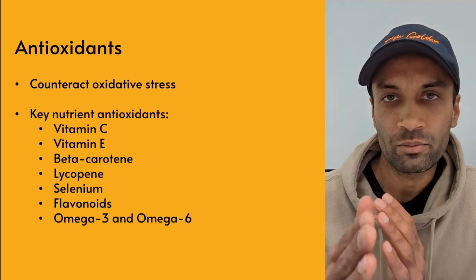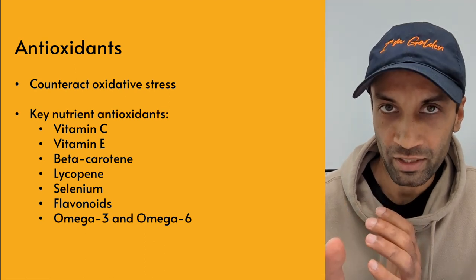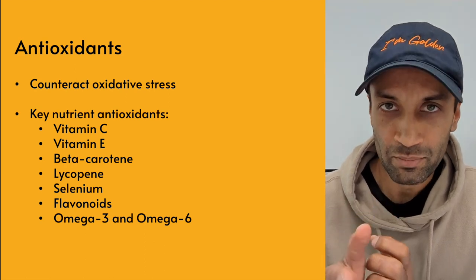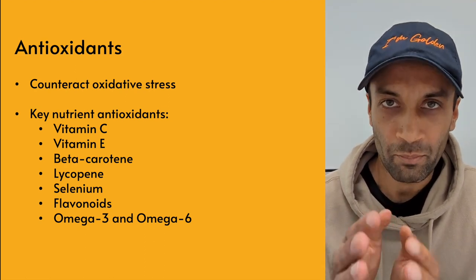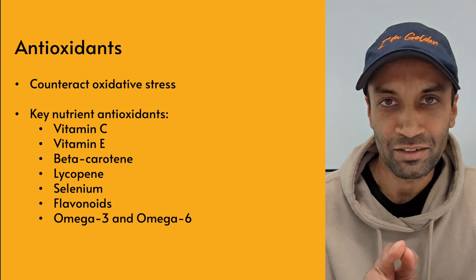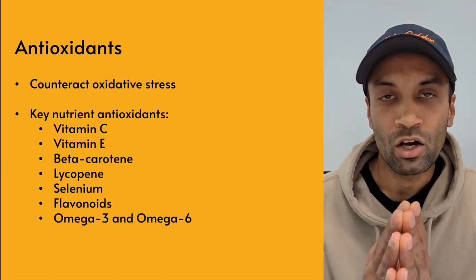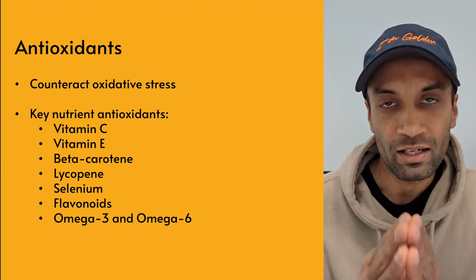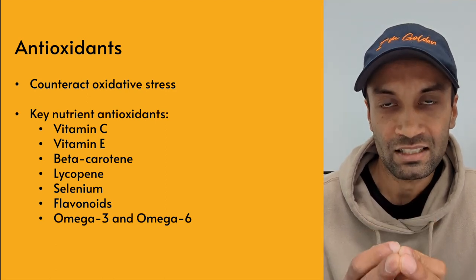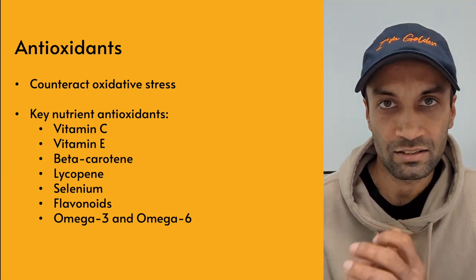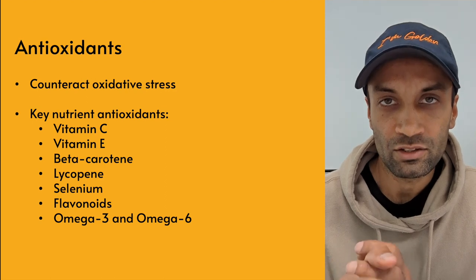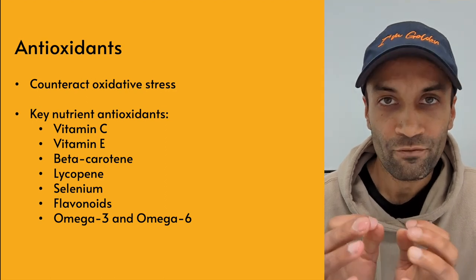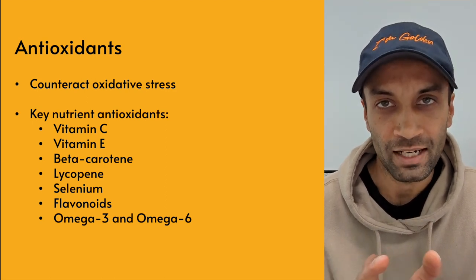Flavonoids: cardamom, turmeric, green tea, grapes, apple, cocoa, berries, onion, broccoli. Omega-3 and omega-6 fatty acids: flax seeds, chia seeds, walnuts, fatty fish, and eggs.